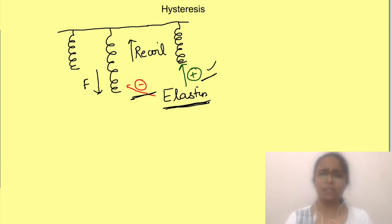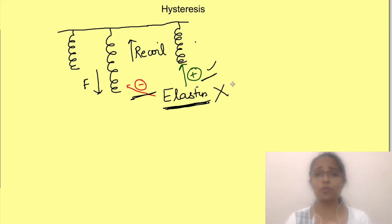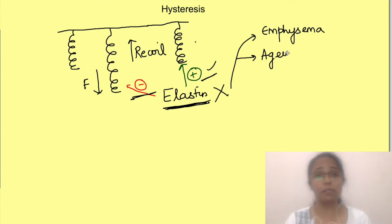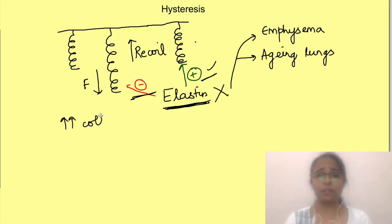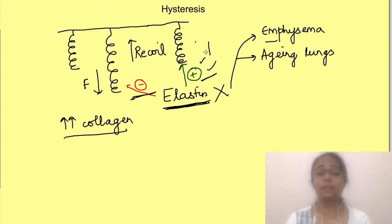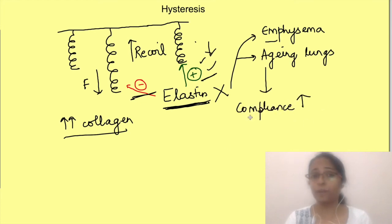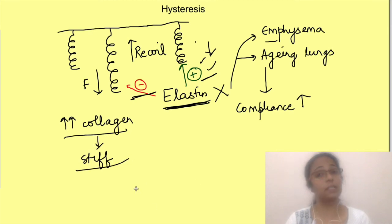What happens to lung compliance if this elastic tissue is destroyed, as in emphysema or aging lungs? Or what if there is too much collagen, as in fibrosis? In emphysema, recoil is decreased, causing an increase in lung compliance. Too much fibrosis, on the other hand, makes the lung stiff, affecting its expansion and decreasing compliance.